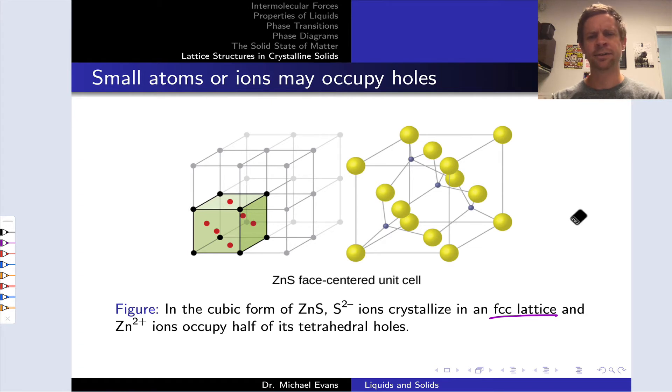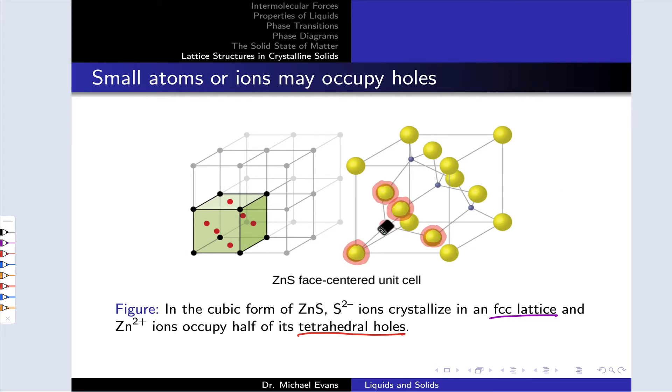To see how and why that is, I first want to point out the tetrahedral holes that are filled. Here's a Zn2+ cation inside a tetrahedral hole, and what I've highlighted in red are the four sulfide anions that form a tetrahedron around the central zinc atom.